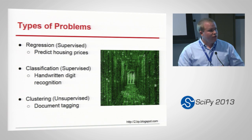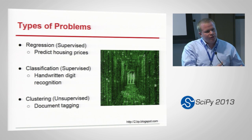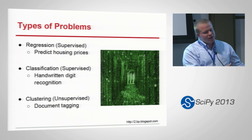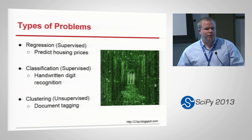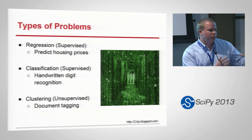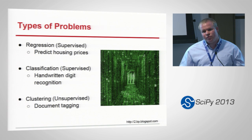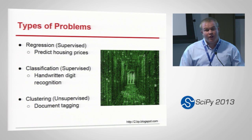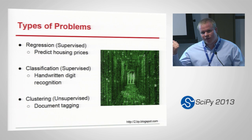Classification is another important area of machine learning. Specifically, if we have thing one and thing two and they have some attributes or features, how do we look at features and say this is thing one or this is thing two? A classic example of this is handwritten digit recognition, specifically MNIST digits, which I will get into later in the slides.